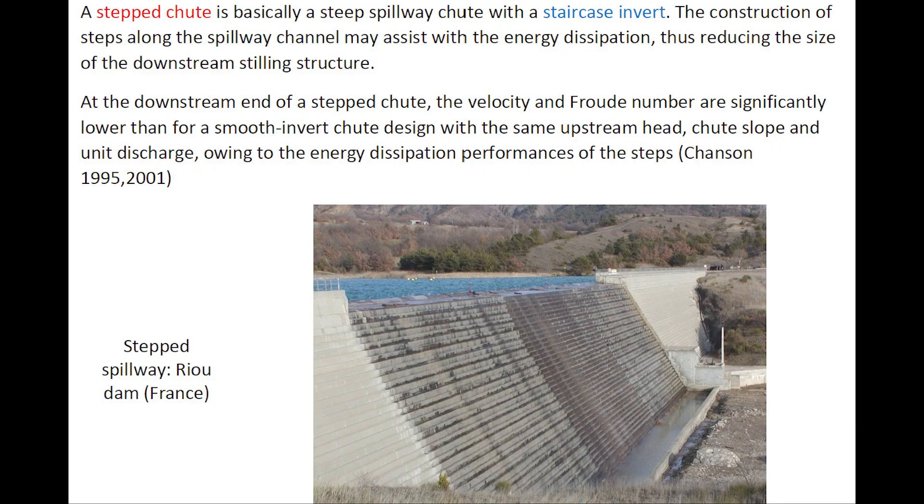A stepped chute is basically a steep spillway chute with a staircase invert. The construction of the steps along the spillway channel assists with the energy dissipation, thus reducing the size of the downstream stilling structure. At the downstream end of a stepped chute, the velocity and Froude numbers are significantly lower than for a smooth invert design with the same upstream head, chute slope and unit discharge, owing to the energy dissipation performances of the steps.